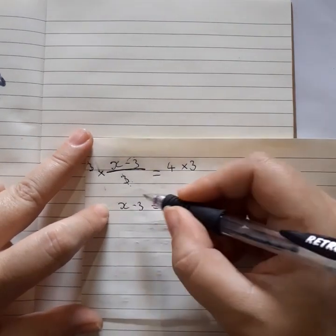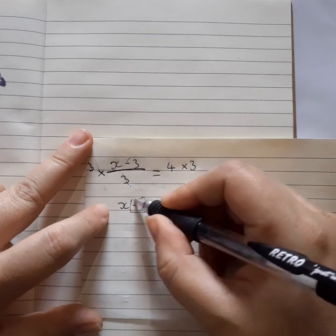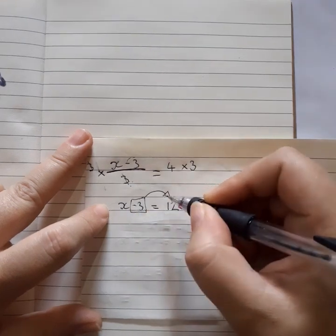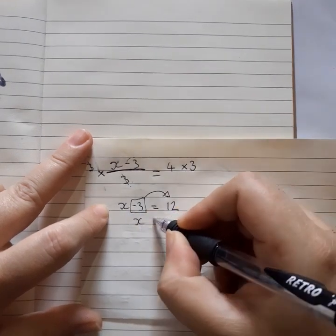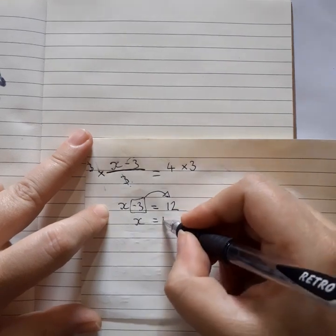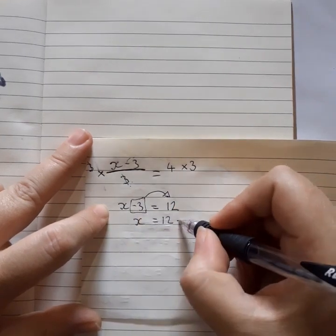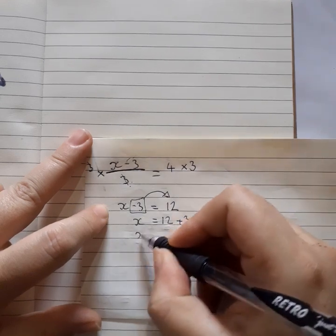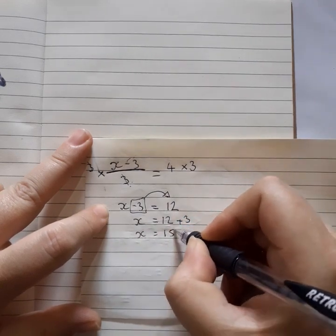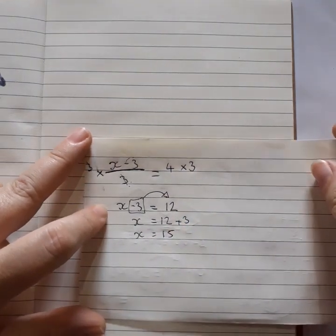Now we want all the x's by itself and all the numbers on the other side. So we're moving that over. We've got x equals and 12 is what we've got. We move this, it becomes positive and x equals 15.